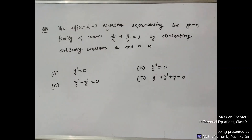Question number 14: The differential equation representing the family of curves x/a + y/b = 1, by eliminating arbitrary constants a and b. Option A: y' = 0. Option B: y'' = 0. Option C: y'' − y' = 0. Option D: y'' + y + y' + y = 0.